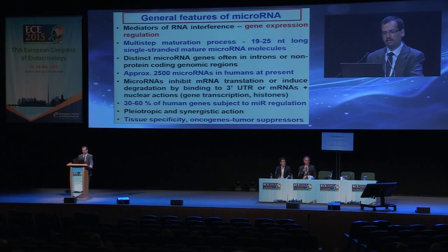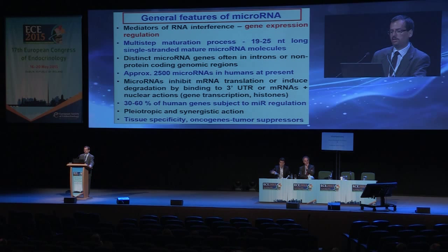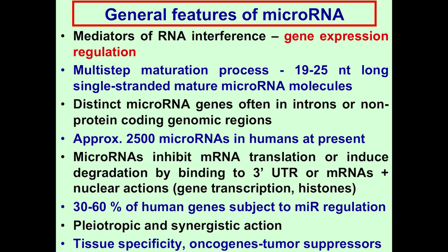First of all, I would like to summarize the general features of microRNA, which are mediators of RNA interference and mostly involved in the regulation of gene expression. They are 19 to 25 nucleotide long single ribonucleic acid molecules in their mature form, arising during a multi-step maturation process. There are more than 2,500 microRNAs known in humans, and their genes are mostly found in non-coding regions like introns or non-protein coding genomic regions previously called junk DNA. The classical action of microRNAs is the inhibition of messenger RNA translation or inducing their degradation by binding to the three-prime untranslated region of messenger RNAs.